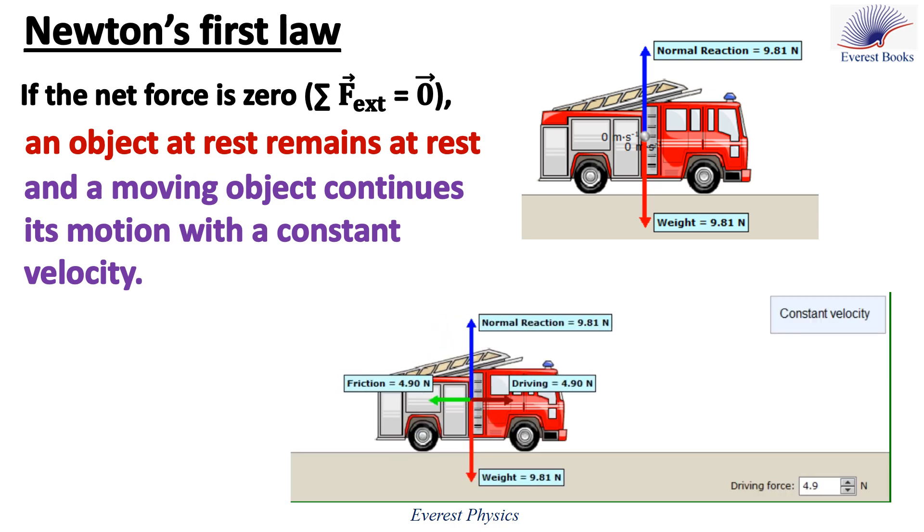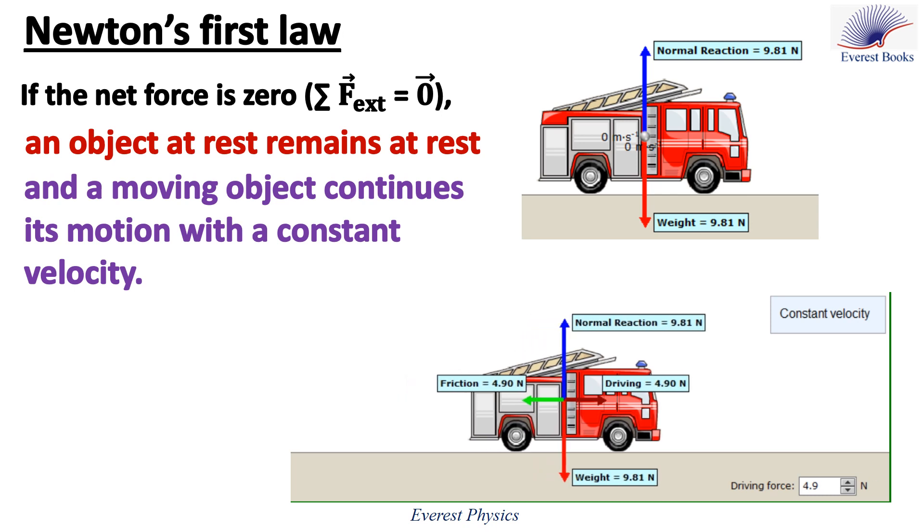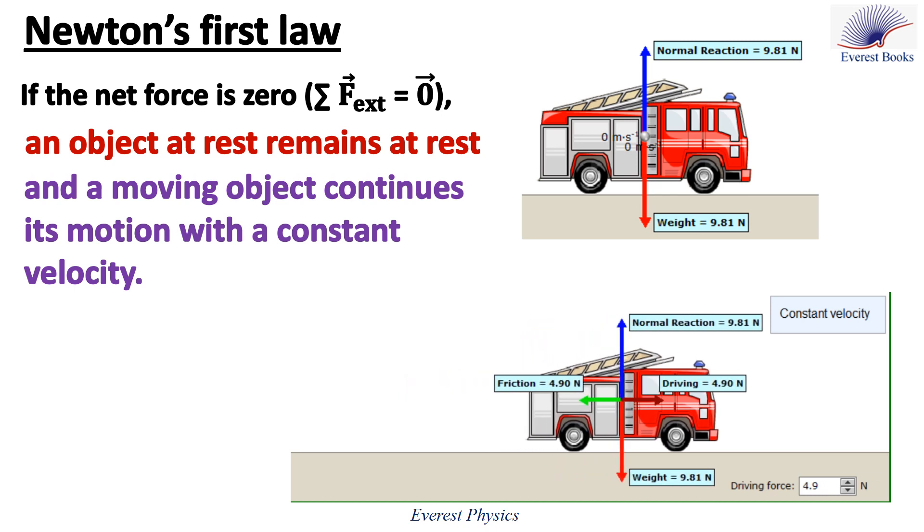Now the toy track is moving with a constant velocity under the action of four forces: the weight, the normal force, the friction, and the driving or the traction force. The toy track tends to stay in uniform rectilinear motion. It will stay in uniform rectilinear motion or moving with a constant velocity as long as the resultant force acting on it remains zero.